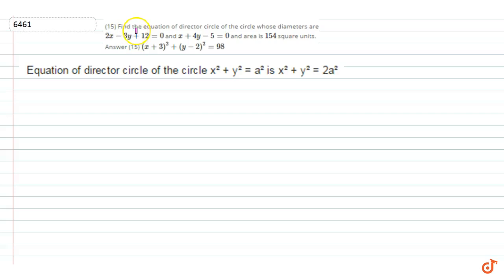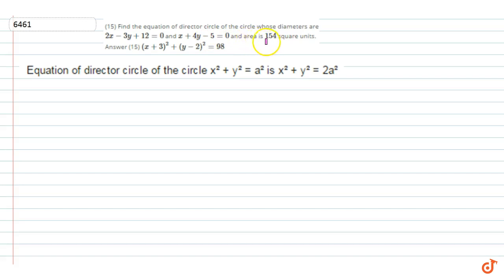In this question, find the equation of the director circle of the circle whose diameters are 2x minus 3y plus 12 equal to 0 and x plus 4y minus 5 equal to 0, and the area is 154 square units.